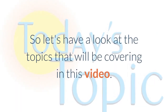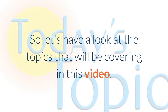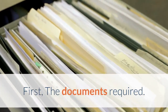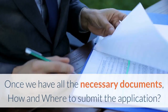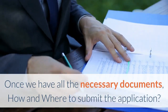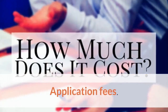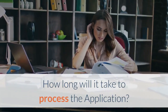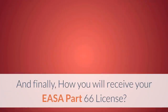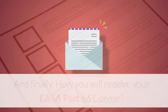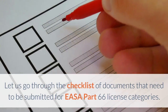Let's have a look at the topics we'll be covering in this video: first, the documents required; once we have all the necessary documents, how and where to submit the application; application fees; how long it will take to process the application; and finally, how you will receive your EASA Part 66 license.